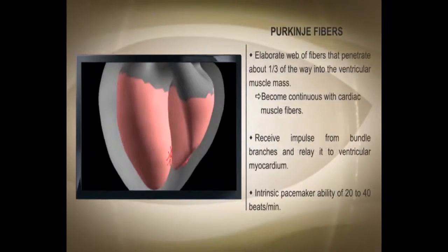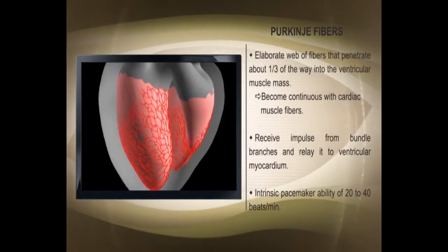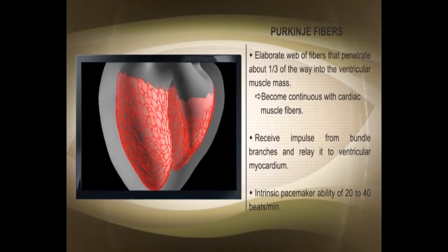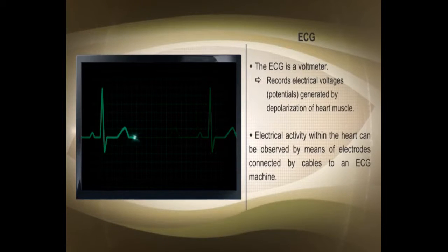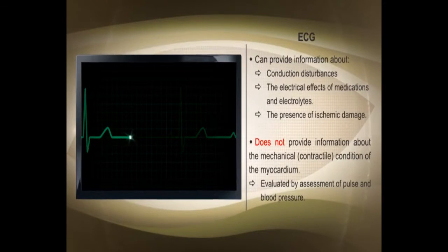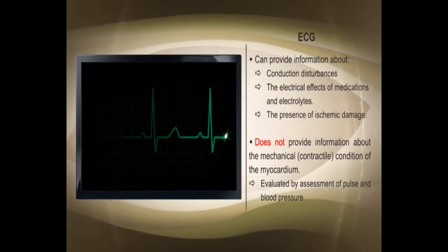Purkinje fibers are the tertiary pacemaker — if both the SA node and AV node are not working, they take over. The AV node can provide a rate between 40 to 60, and Purkinje fibers give a rate between 20 to 40. The ECG itself is a voltmeter recording electrical activity within the heart. It does not tell you about mechanical function — a patient may have an ECG rhythm but be pulseless. Always assess cardiovascular function by checking pulse and looking for signs of life.